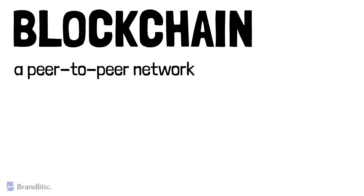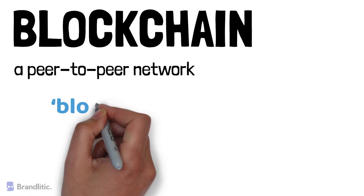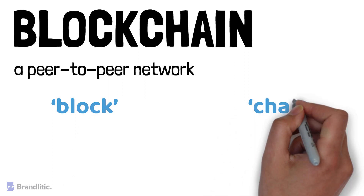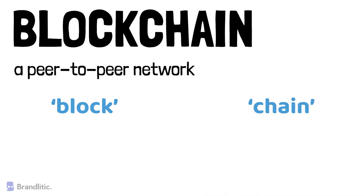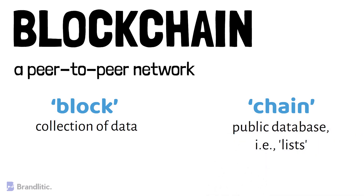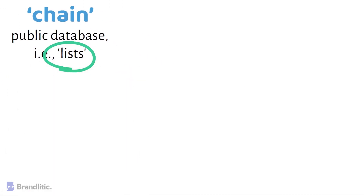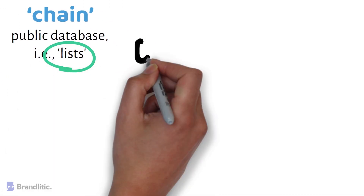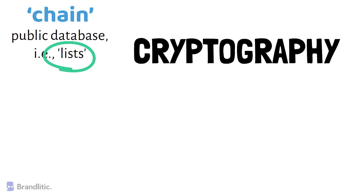First, the basics. Blockchain is a peer-to-peer network and the word blockchain is made up of two separate terms: block and chain. A block is referred to as a collection of data, and the chain is referred to as a public database of these blocks, which is further stored as a list. These lists are linked using cryptography, which makes it the most essential and fundamental requirement for creating a blockchain.